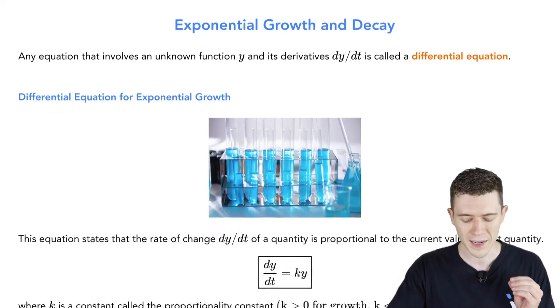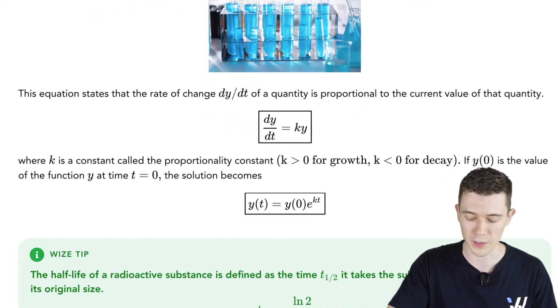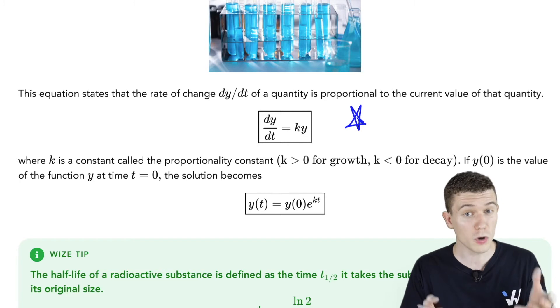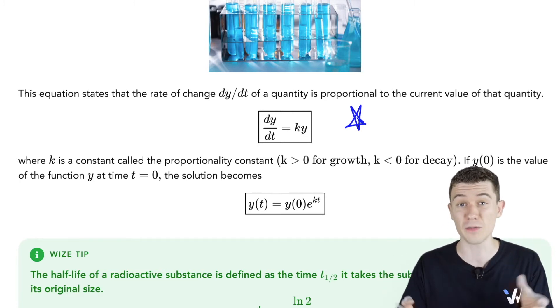The main differential equation dealing with exponential growth and decay is this one. We have dy/dt, which means that the quantity y is changing with respect to time, equal to some value k times y itself. A quantity's rate of change is growing proportionally to the quantity itself at that time.